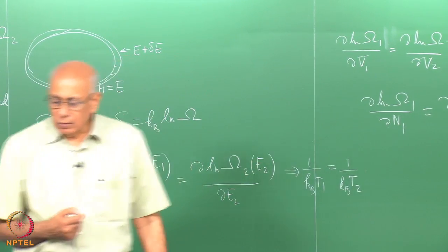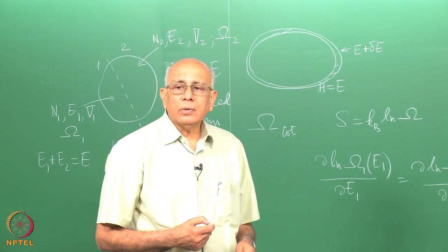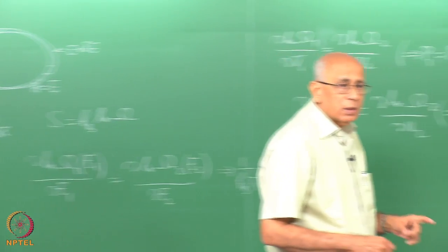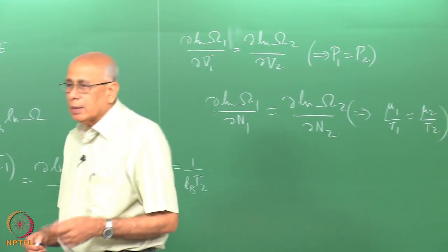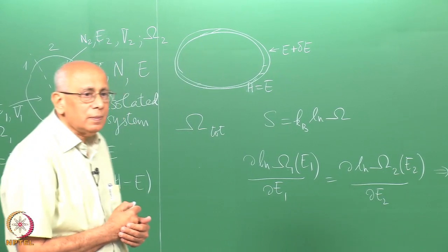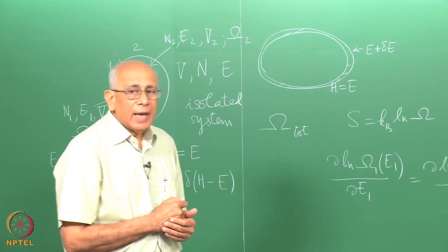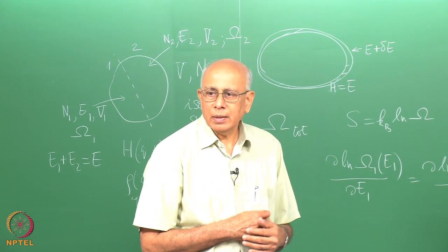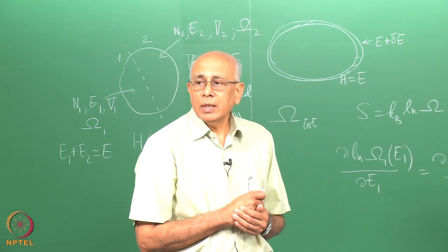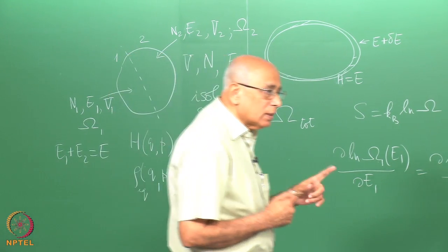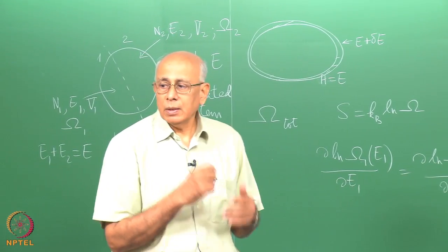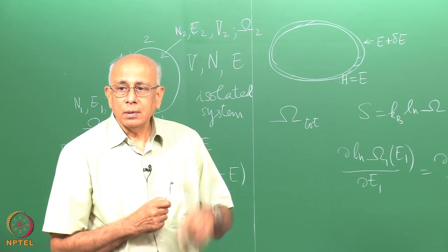We are not primarily interested in thermodynamics because it applies only in equilibrium and deals only with average quantities — it tells you nothing about fluctuations. Anything involving fluctuations about statistical averages has to be put in as input to thermodynamics. A notable example: you cannot compute specific heats within thermodynamics because specific heats involve the variance of the energy, and thermodynamics only deals with the first moment — the average. Specific heat has to be put in as an input parameter.